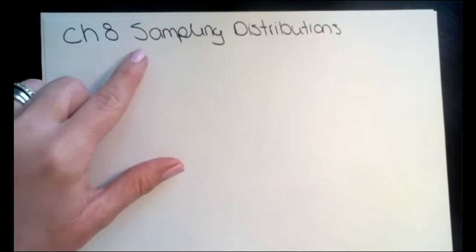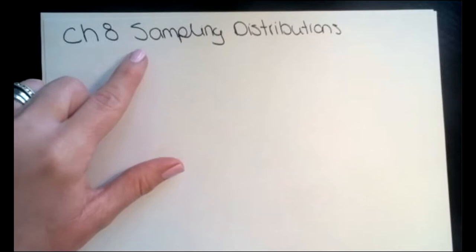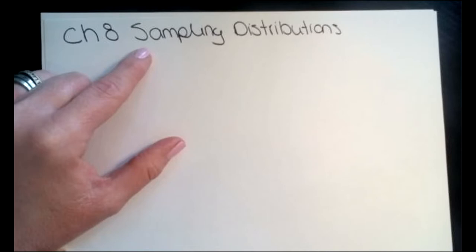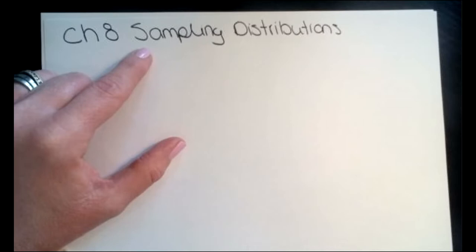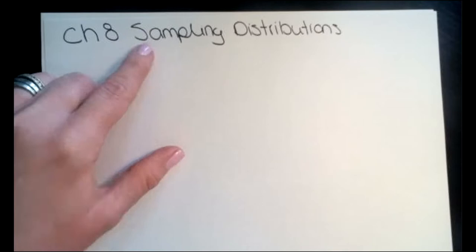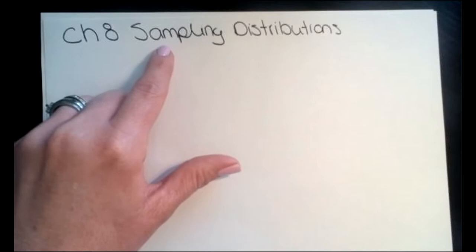Today we're going to focus on numerical data. So for sampling distributions, I want you to think about if we don't know that the random variable follows a normal probability model like what we were studying last week, and we want to learn about the random variable. We do this by looking at a sample — not just one sample, but multiple samples. We're going to look at the distribution of all distinct samples of size n from our population.